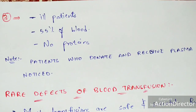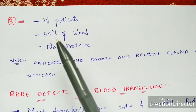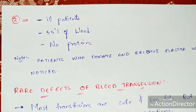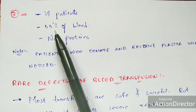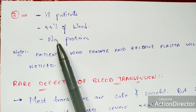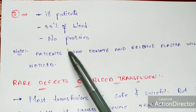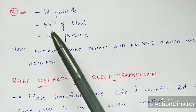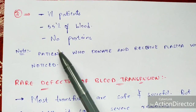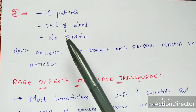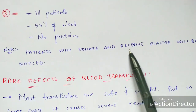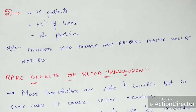Plasma transfusion is used for patients who are very ill or in poor health condition. Plasma constitutes 55% of the total blood. If plasma content decreases — indicated by proteins not being transported throughout the body — the person may lead to death. After plasma transfusion the patient becomes normal. Patients who donate and receive plasma are recorded in the hospital register.